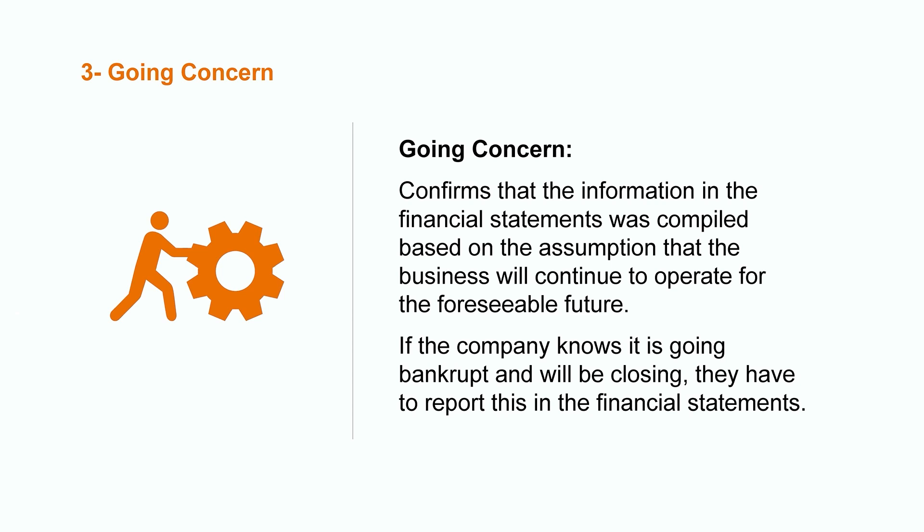The third assumption is the going concern assumption. Going concern confirms that the information in the financial statements was compiled based on the assumption that the business will continue to operate for the foreseeable future. This means possible investors or creditors can assume the company plans to continue its operations. In the event a company knows it's gone bankrupt and is planning to shut its doors, they would have to report this within the financial statements.